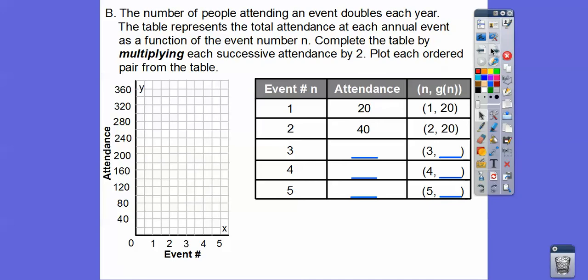Here's another example. The number of people attending an event doubles each year. The table represents total attendance as a function of the event number n. We complete the table by multiplying each successive attendance by 2. So 20 times 2 is 40, times 2 is 80, times 2 is 160, and then 320.